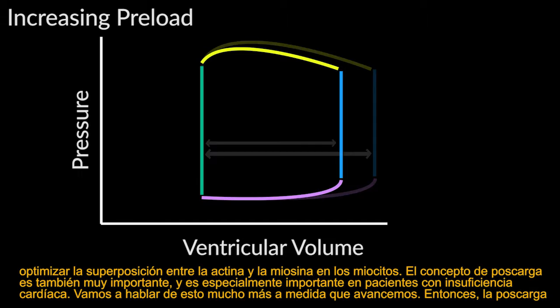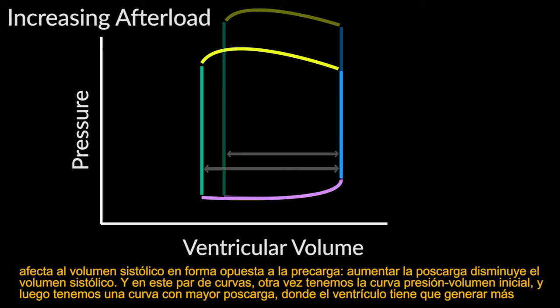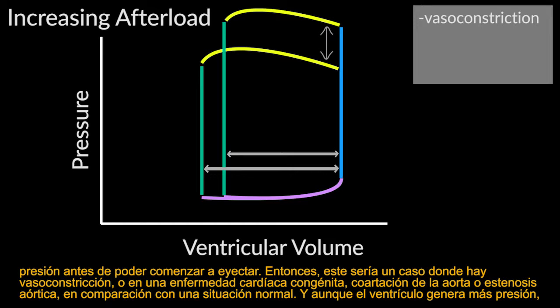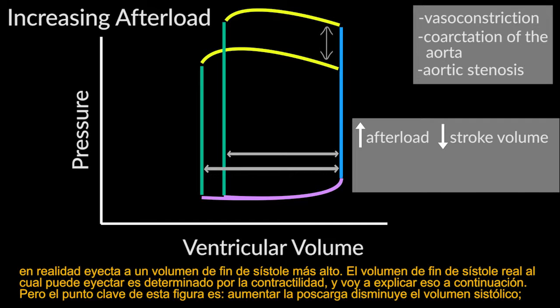Afterload is also very important, especially in heart failure patients. Afterload affects stroke volume in the opposite way from preload — increasing afterload decreases stroke volume. With increased afterload, the ventricle must generate more pressure before it can start to eject, as in vasoconstriction, coarctation of the aorta, or aortic stenosis. The ventricle ejects to a higher end-systolic volume. Therefore, decreasing afterload increases stroke volume.